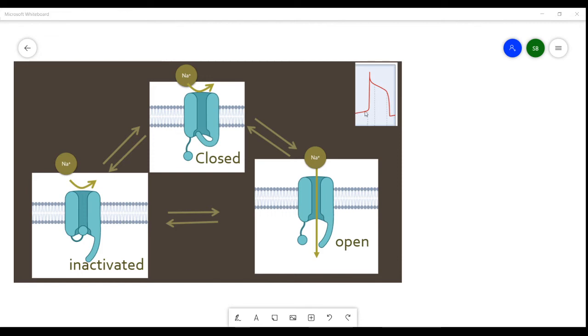When the cell becomes more depolarized, and in the case of the heart muscle, this is caused by the funny current, which is separate to the sodium channels, as depolarization occurs, sodium channels begin to pass from the closed state into the open state.